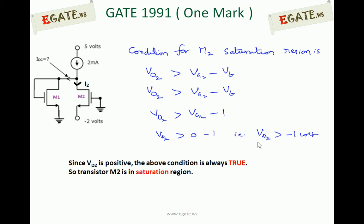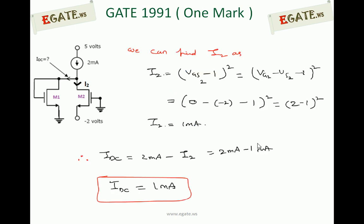Since M2 is in saturation, we use the saturation current equation: I2 = (VGS2 − 1)² mA. VGS2 = VG2 − VS2 = 0 − (−2) = 2 V. So I2 = (2 − 1)² = (1)² = 1 mA.